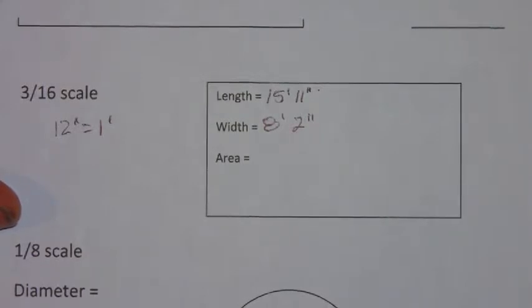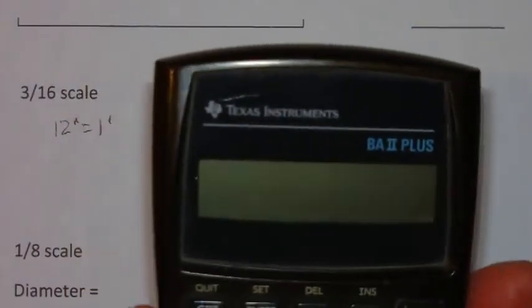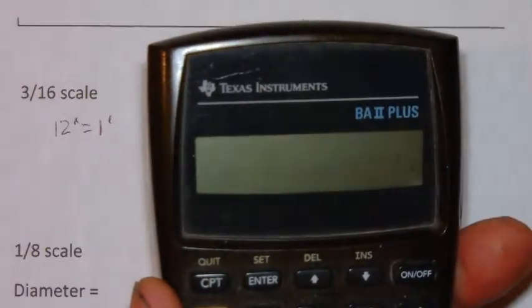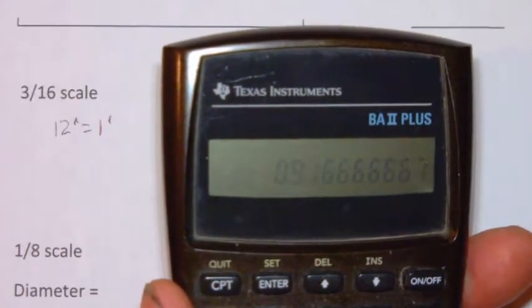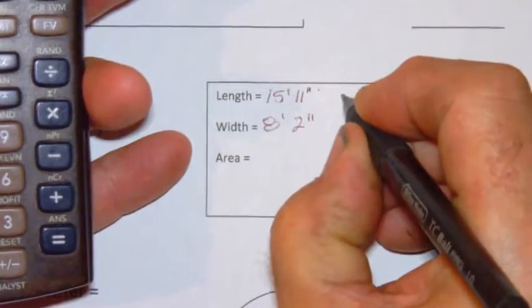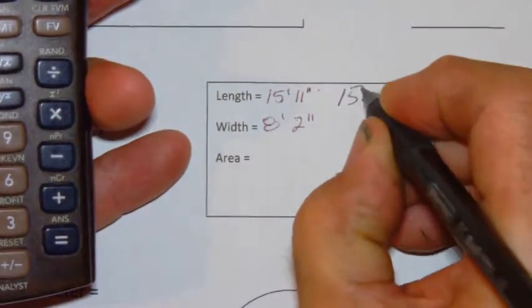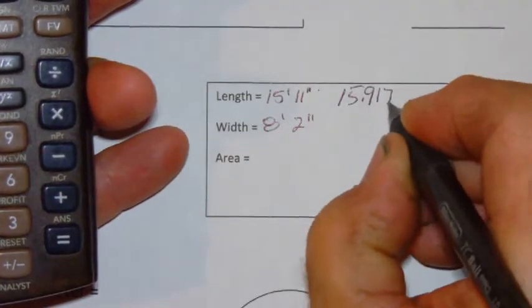Now in order to determine the area, we have to convert the inches into decimals. Remember that there are twelve inches in one foot. So we can divide eleven by twelve, and eleven inches equals 0.9166 feet. Therefore the length would be 15.917 feet.